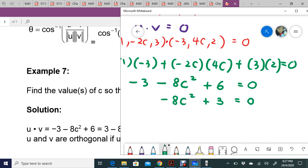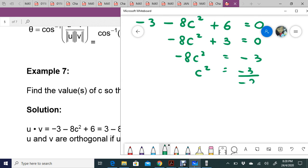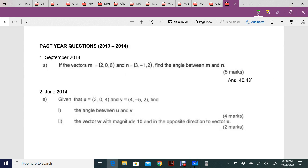So negative 8c squared equals negative 3. Simplify it: c squared equals 3 over 8. Every time you see square, you will have plus and minus, so c equals plus or minus the square root of 3 over 8.